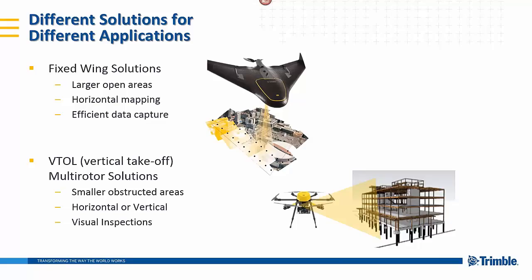The different solutions serve different applications. The fixed-wing aircraft is specifically designed for large open areas, horizontal mapping, and highly efficient data capture of larger areas. The multi-rotor vertical takeoff and landing solution is specifically designed for smaller, more obstructed areas for horizontal and vertical type applications. As a plus, it also includes visual inspection capability — a live video feed that allows you to fly around a structure to capture live video and conduct an actual inspection.